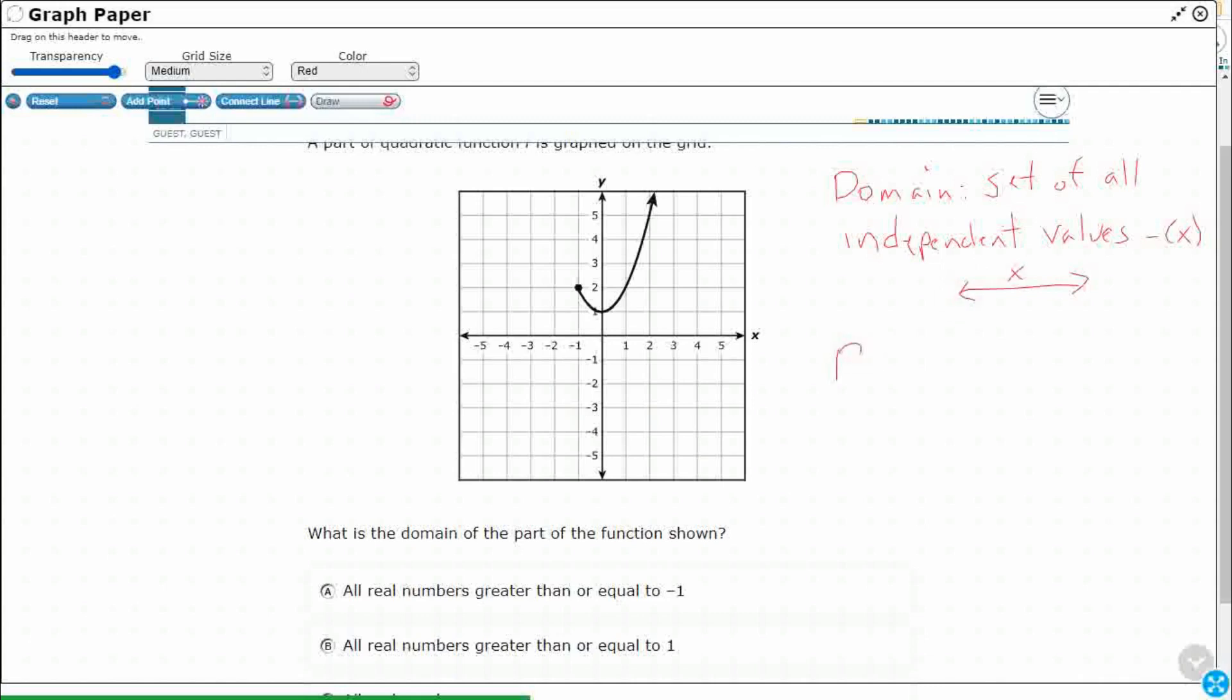Now this problem could have also asked us about the range so let's just separate them. The range is going to be the set of all dependent variable values. This is the same for quadratics, the same for linear functions. So thankfully these terms don't change depending on which type of function we're dealing with. So that's going to be our vertical y-axis.